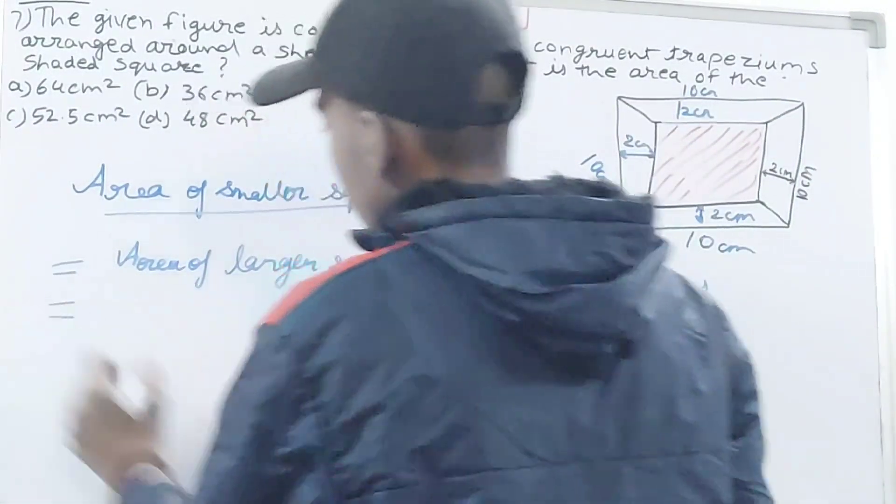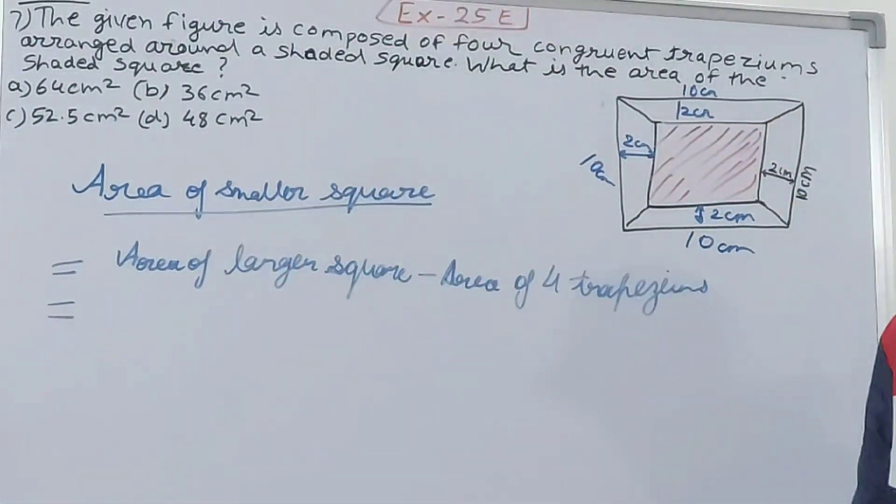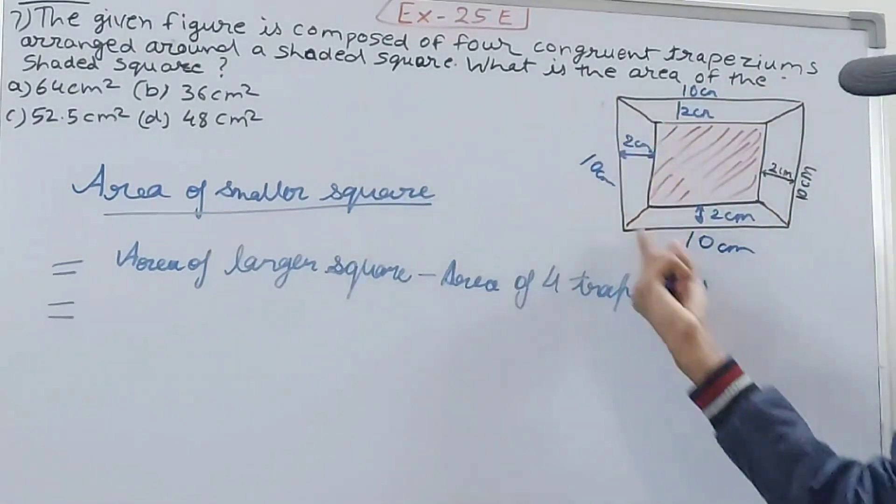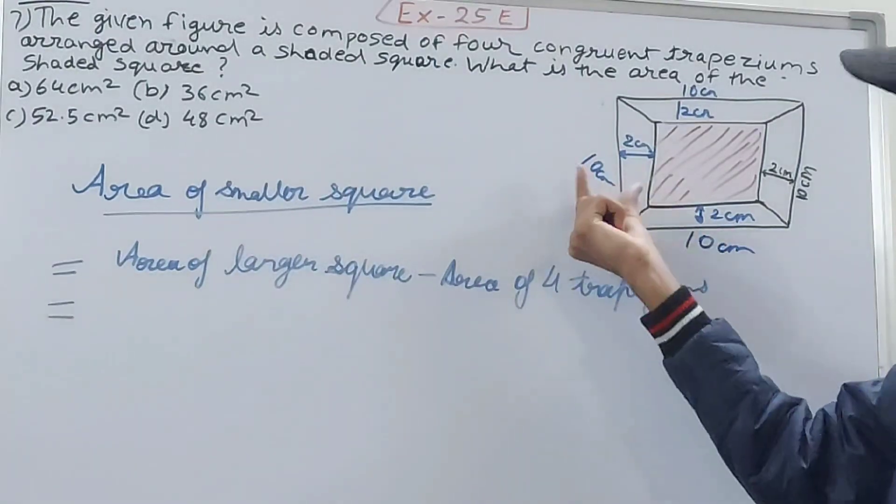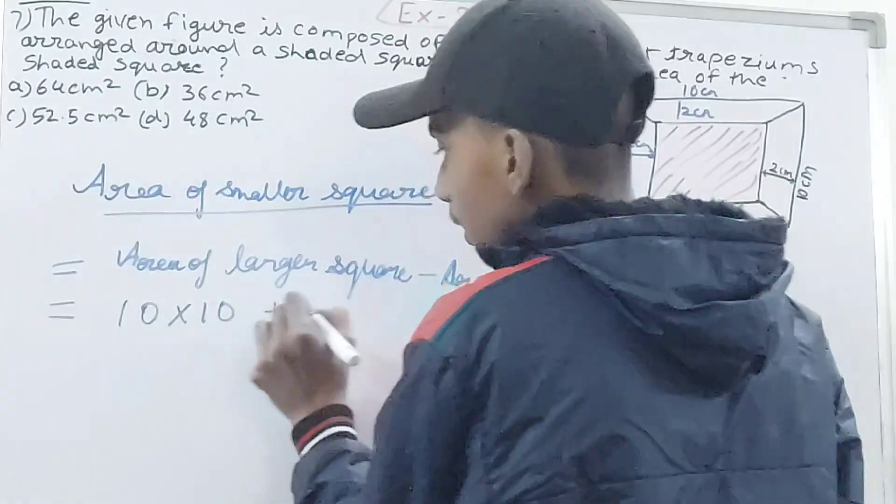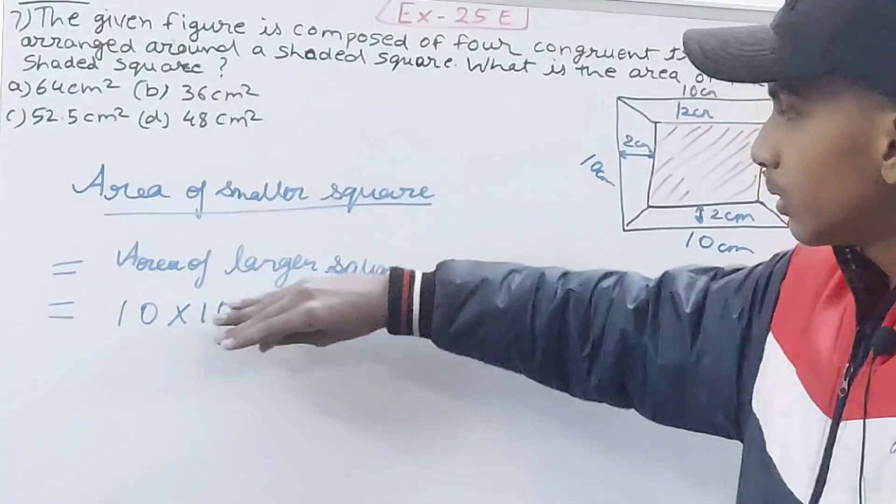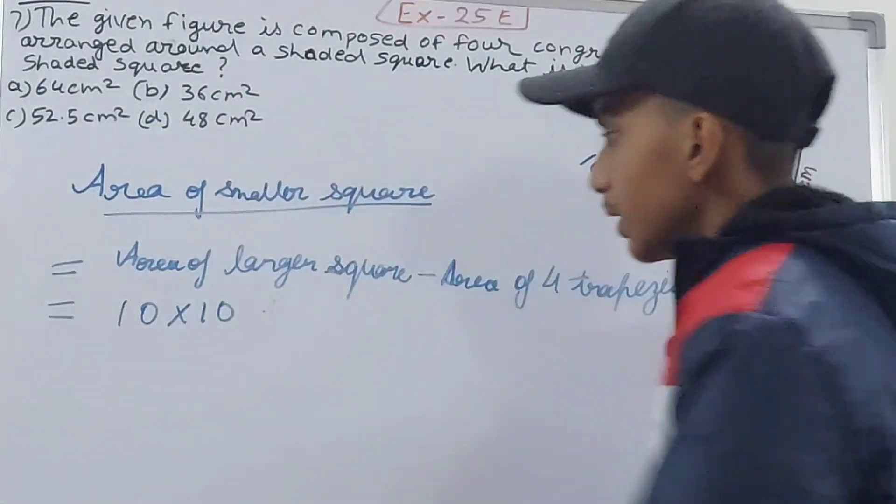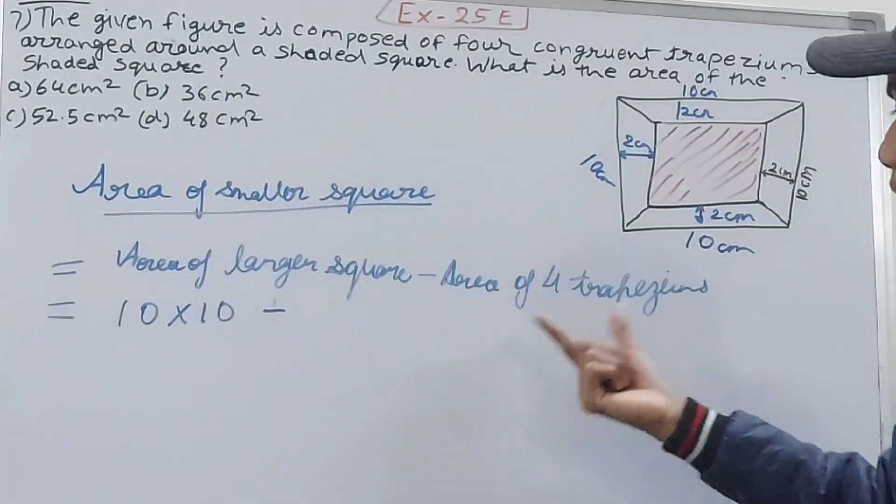Why this? Because there are four trapeziums with the same area. So if I calculate area of one, then I can subtract. Area of larger square means this outer square, it is 10 centimeters, so the area becomes 10 into 10.